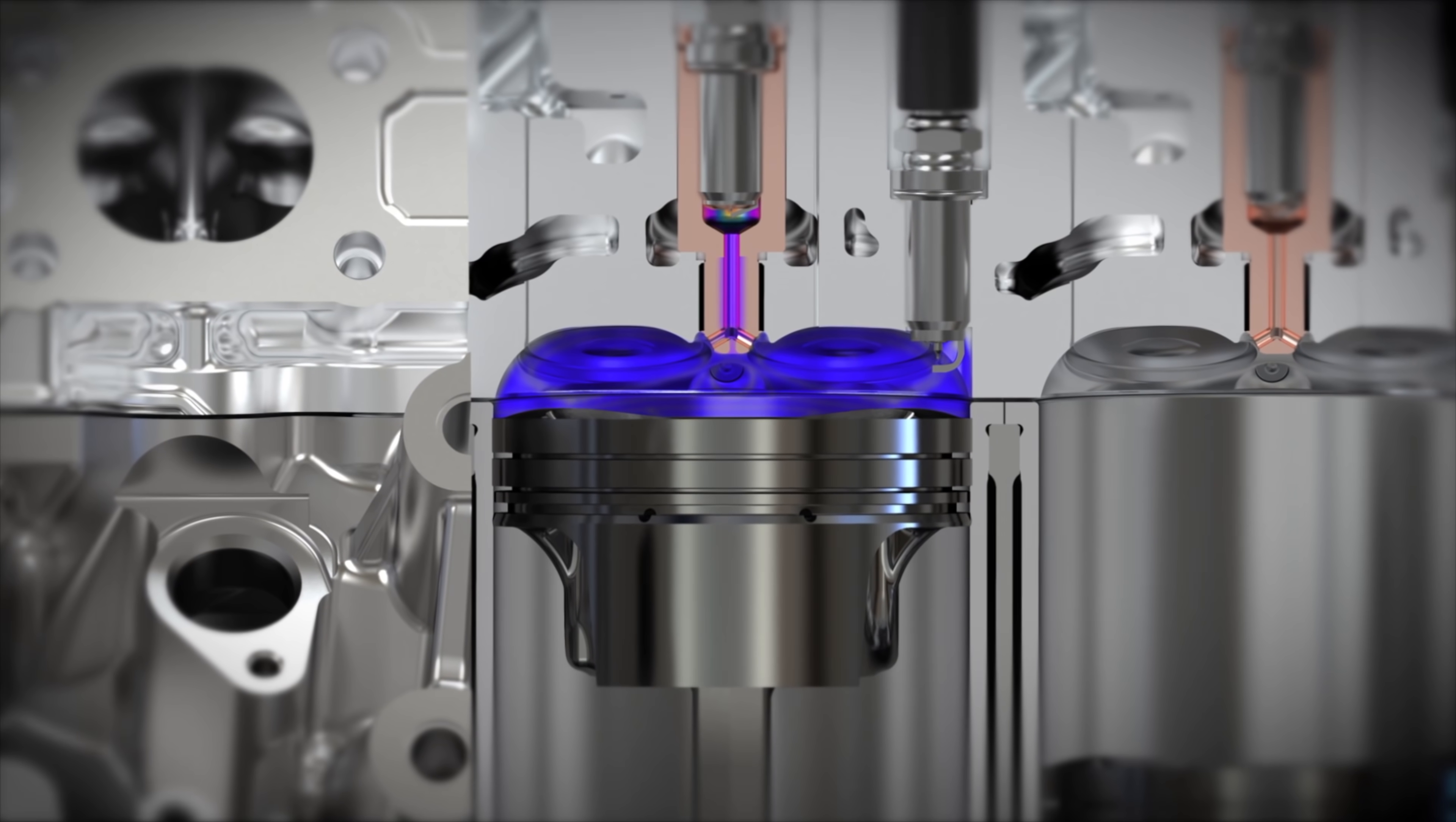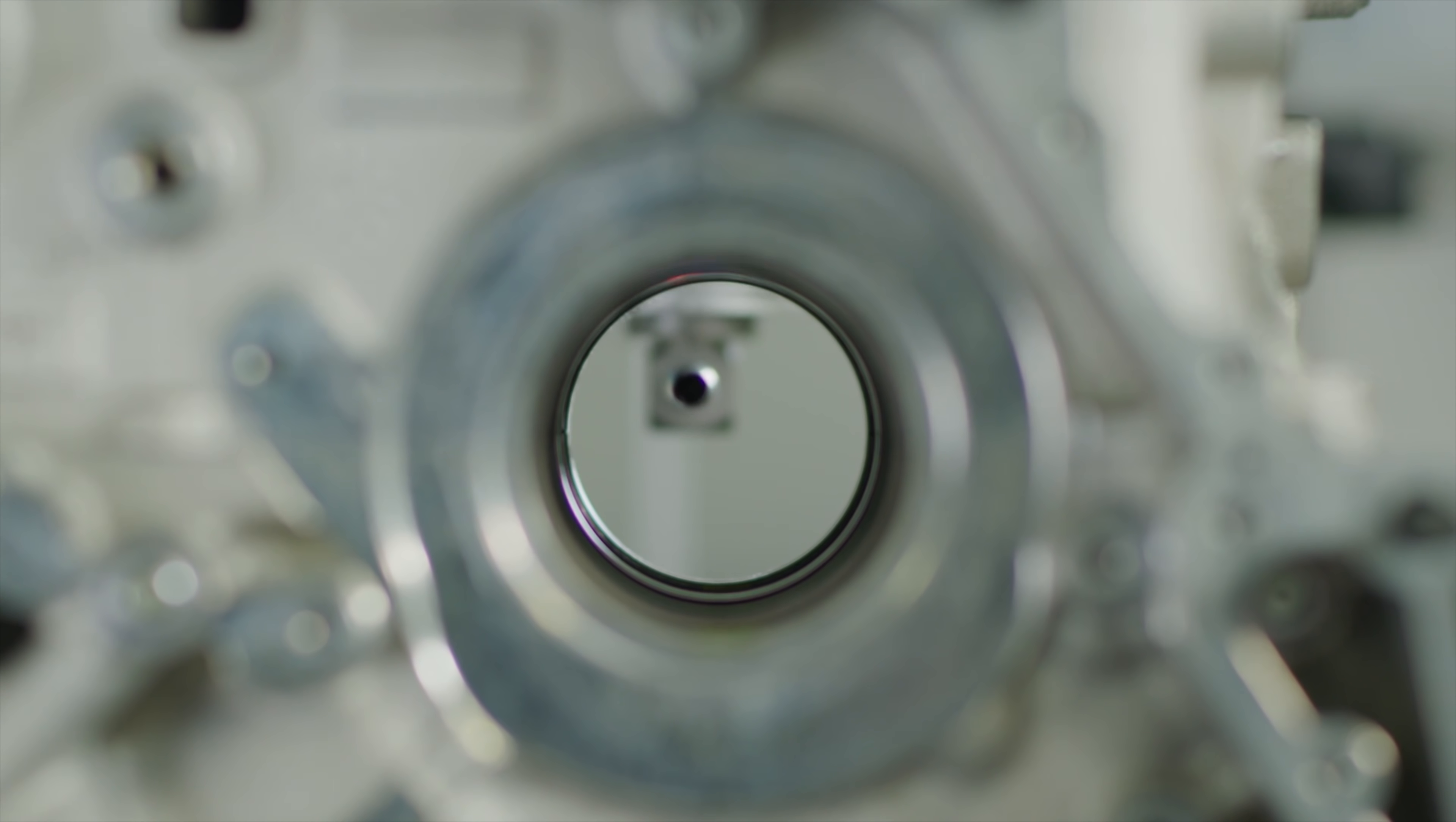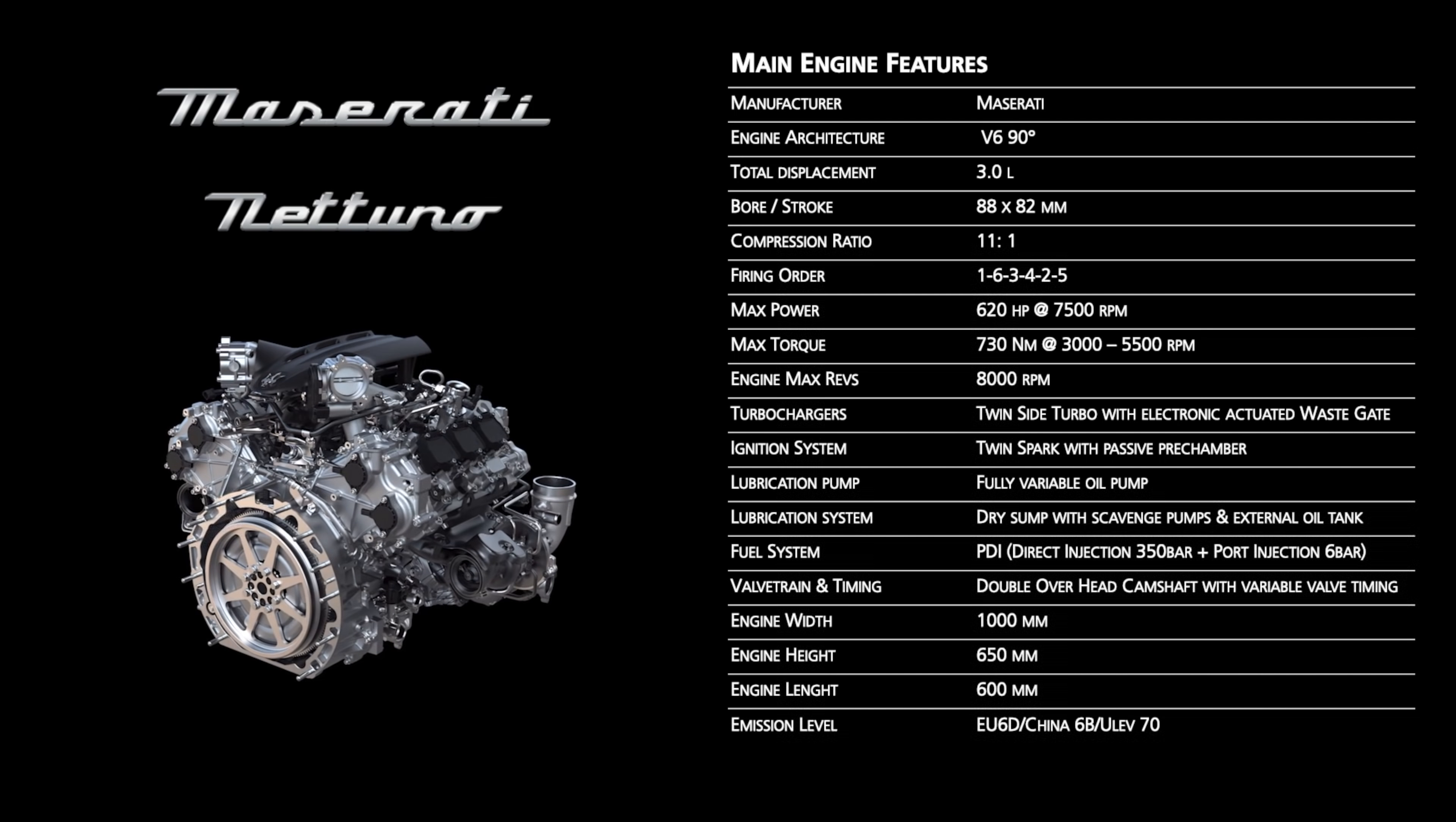Now before we move on to how the passive system works in the Maserati engine, first let's just cover the general specs of the engine. It's a 3.0-liter twin-turbo 90-degree V6 engine. It's making 620 horsepower and 730 newton-meters of torque with an 11 to 1 compression ratio and using relatively wide cylinders, each with an 88 millimeter bore and an 82 millimeter stroke. The engine revs up to 8000 RPM making over 200 horsepower per liter.